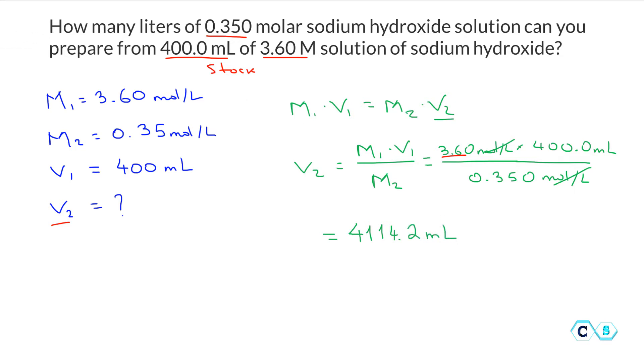So what we want to do here is pay attention to the significant figures. We have three significant figures, we have four, and we have three here. So our answer needs to be three significant figures, which means that we're going to keep these three numbers here and drop these two. So this is equal to 4110 milliliters.